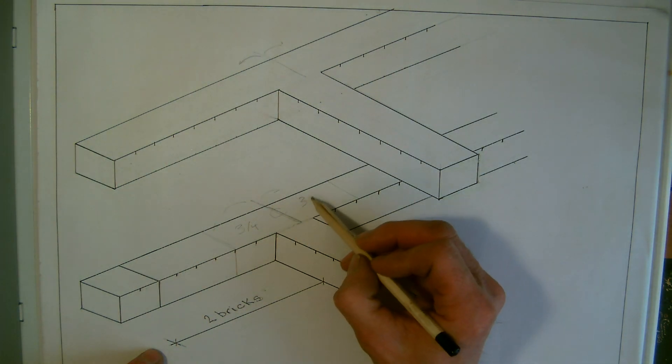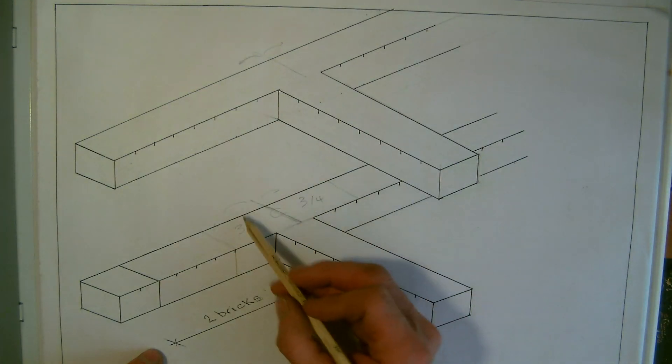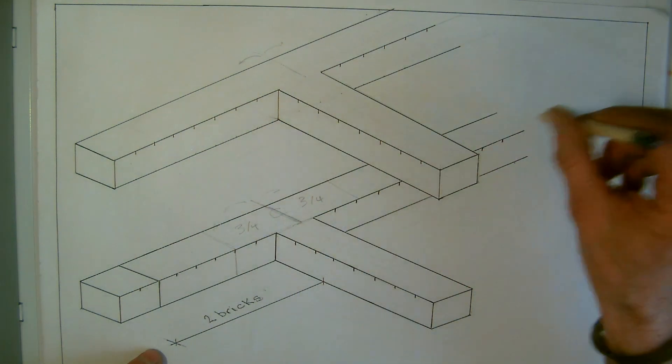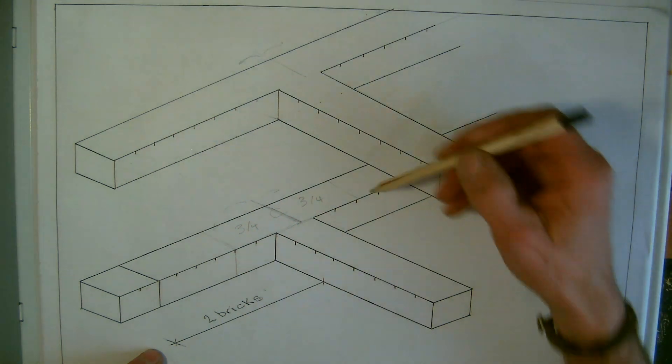So we can see we've got symmetry there: header, stretcher, three-quarter, three-quarter. And then we would carry on the rest of the course in stretcher or half bond.